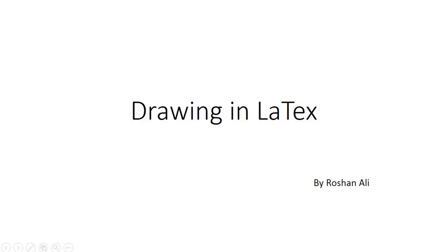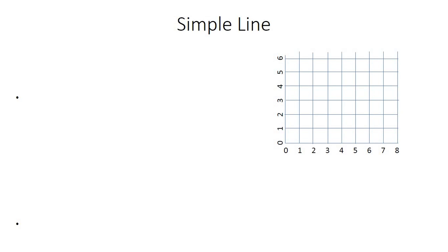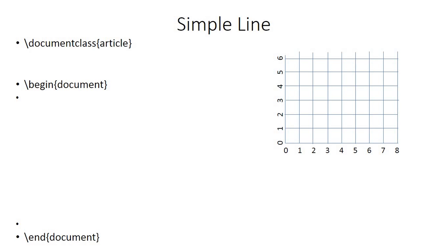Today I'm going to tell you about how to draw geometric shapes in LaTeX using TeXstudio. First of all let me draw a line. To draw a line you will have to write the basic code first: \documentclass{article}, \begin{document}, and \end{document}. These three are the basic tags, and then for drawing geometric shapes we need a package called TikZ.